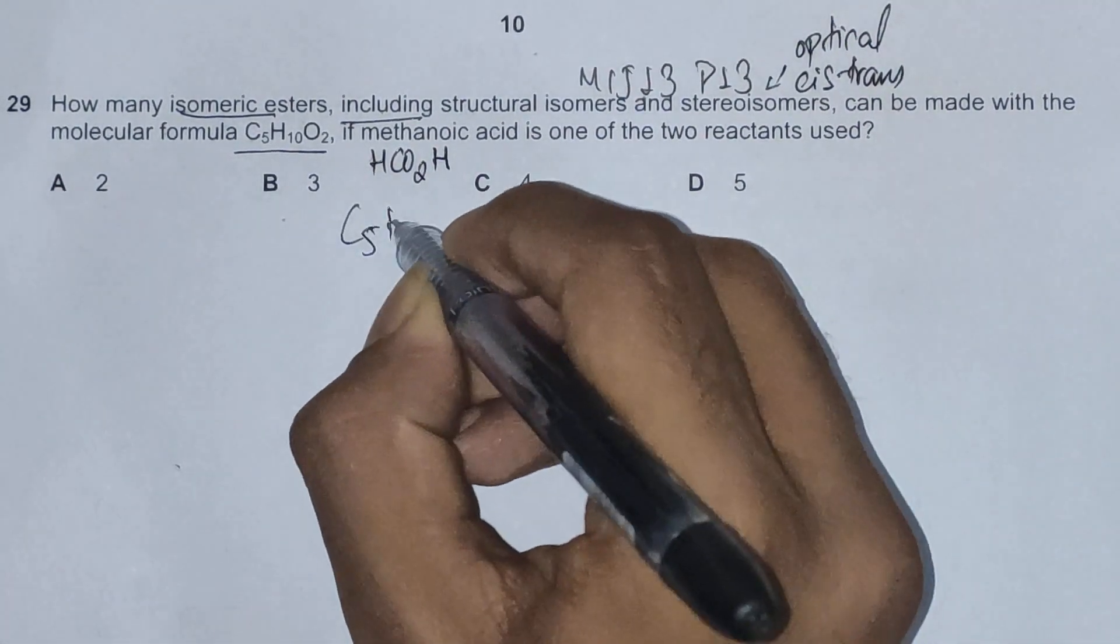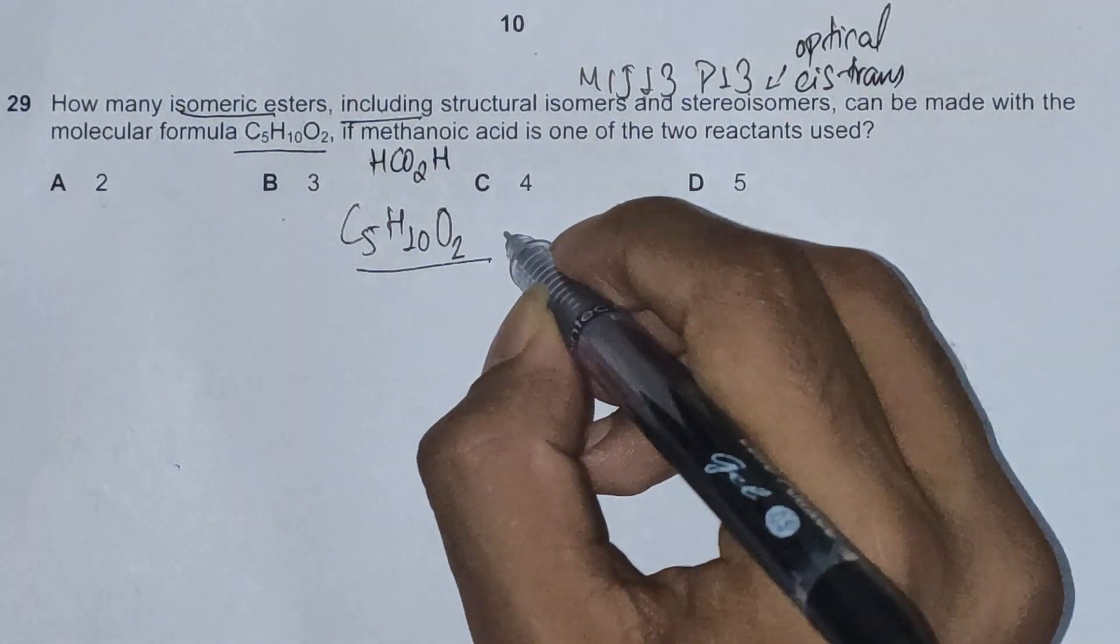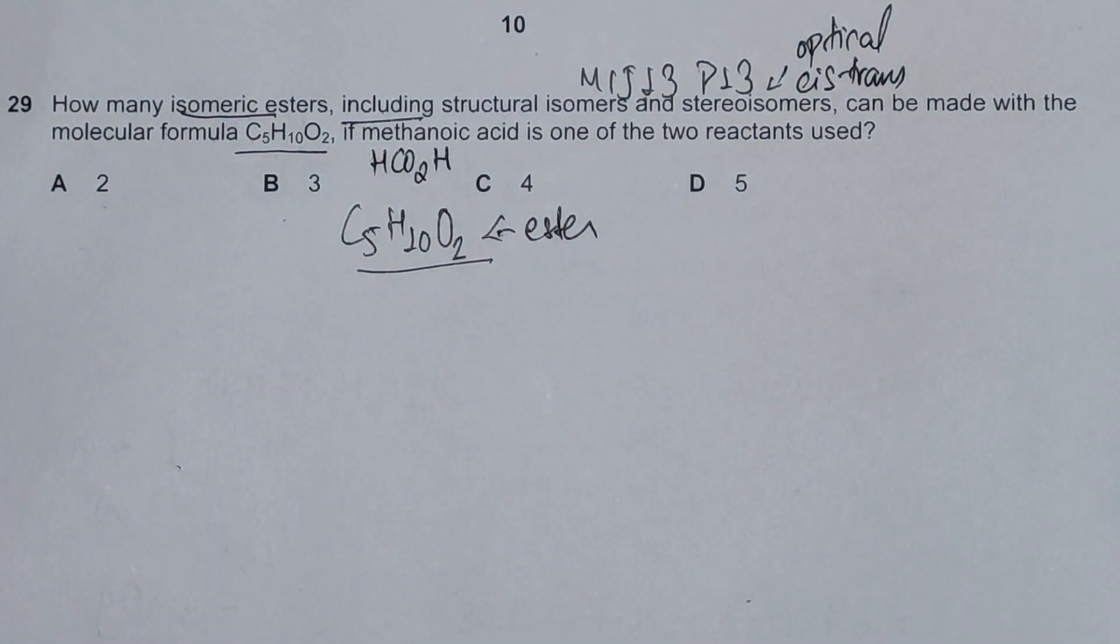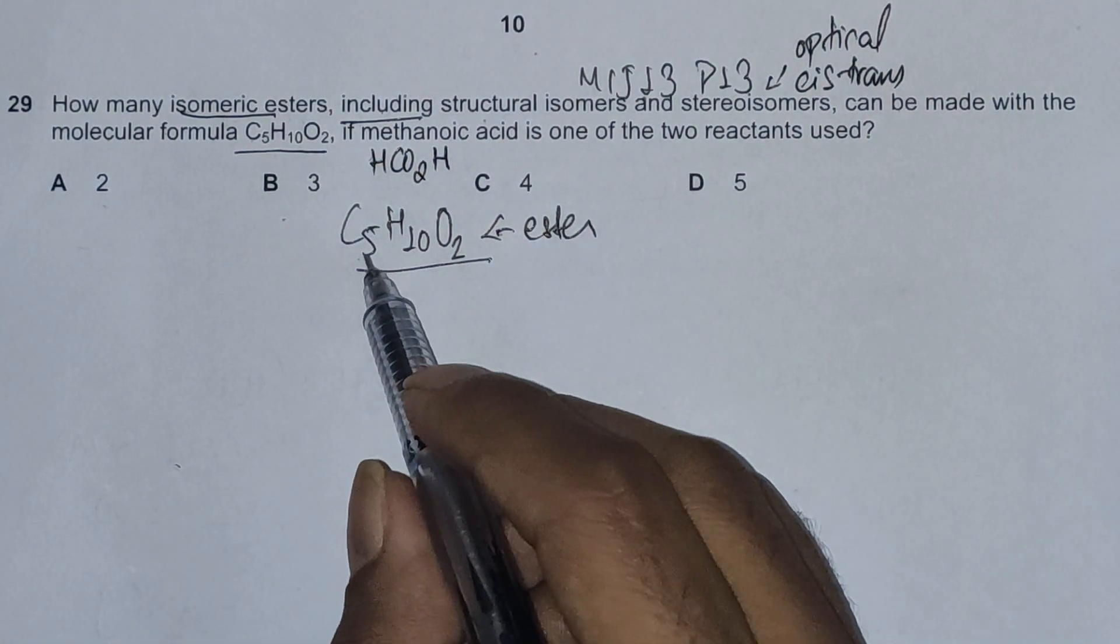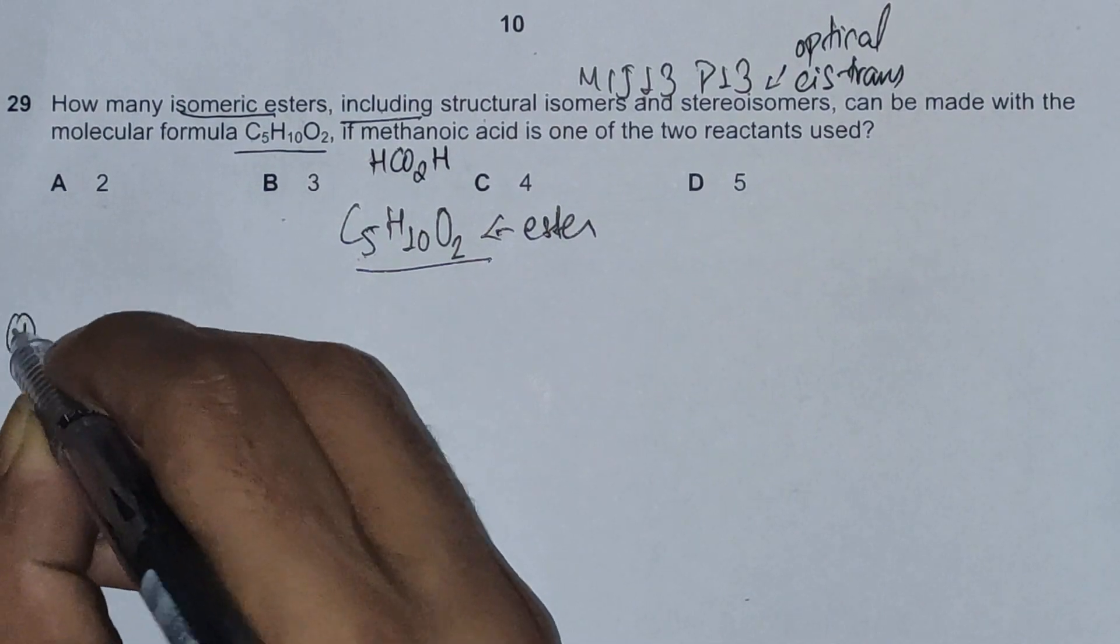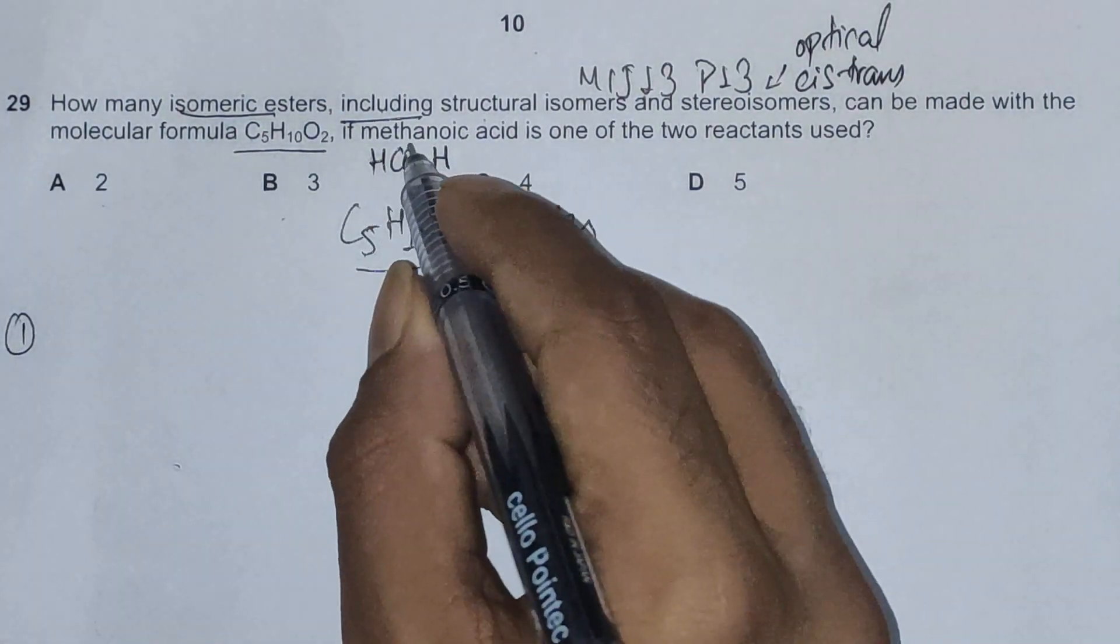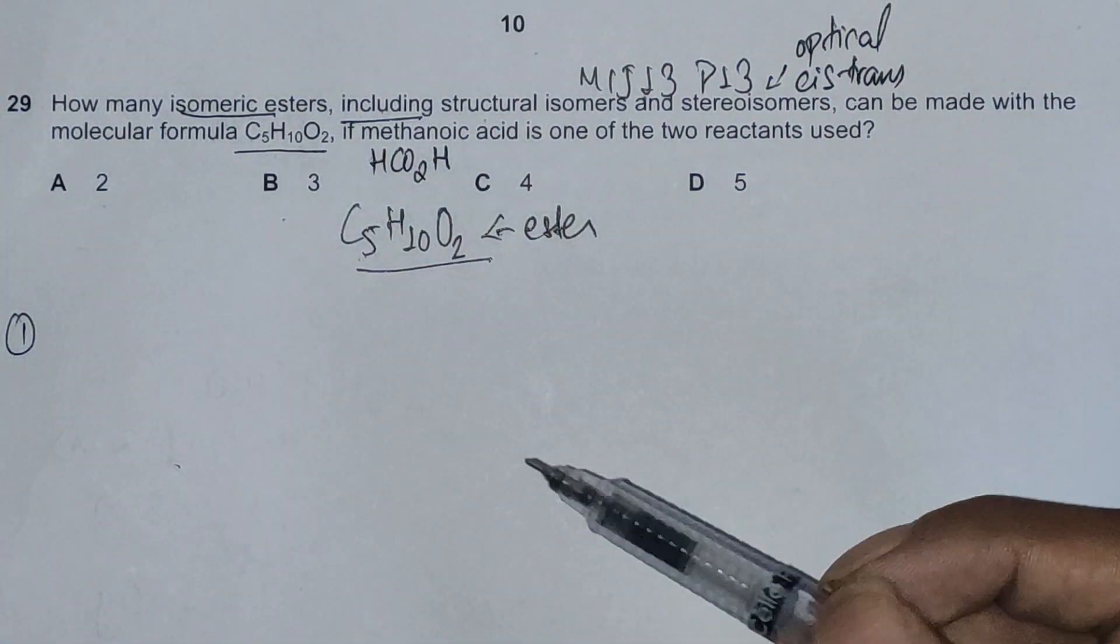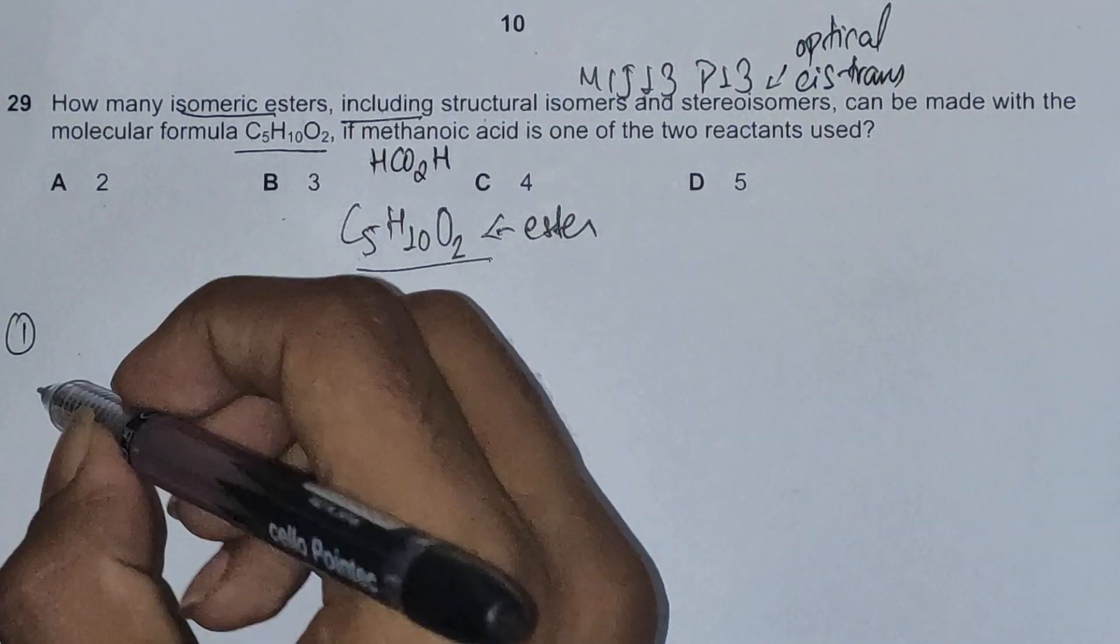First, the molecular formula of the product is C5H10O2 and this is an ester. We have to construct as many isomers, being either structural or stereoisomers, as possible from the ester with this molecular formula. The first one will just be a straight chain ester because methanoic acid is one of the reactants, and the way of forming an ester is first the carboxylic acid and then the alcohol.